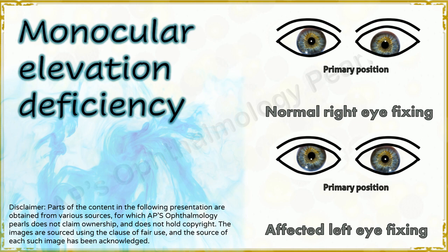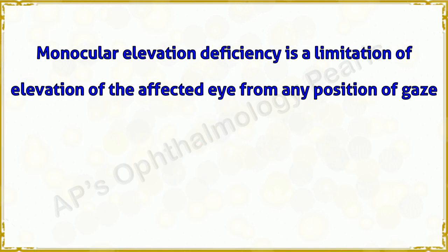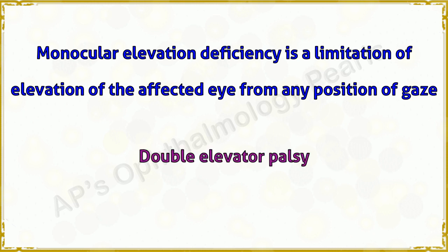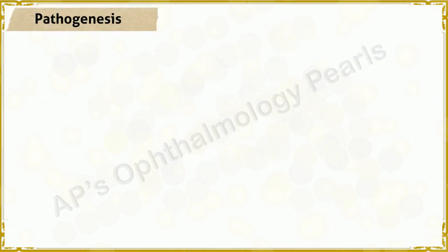Today we shall discuss monocular elevation deficiency. Monocular elevation deficiency is a limitation of elevation of the affected eye from any position of gaze. It was earlier termed double elevator palsy, a term coined by Dunlap, as it was believed to be due to a paralysis of both elevators of the eye — that is the superior rectus and inferior oblique. Other causes have been described and hence this term has been replaced by monocular elevation deficiency.